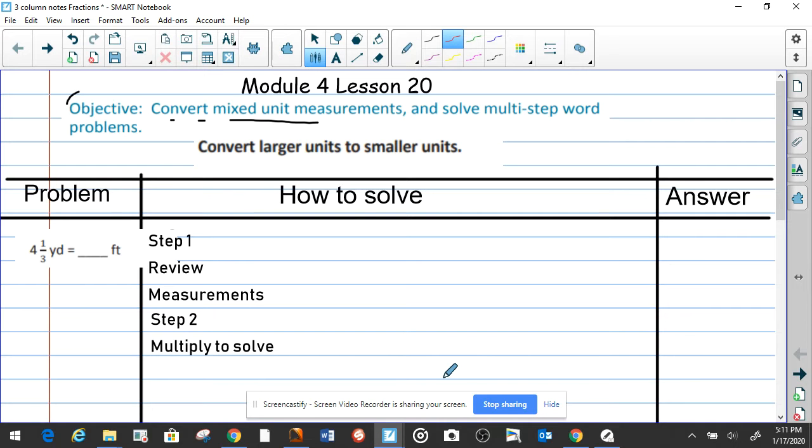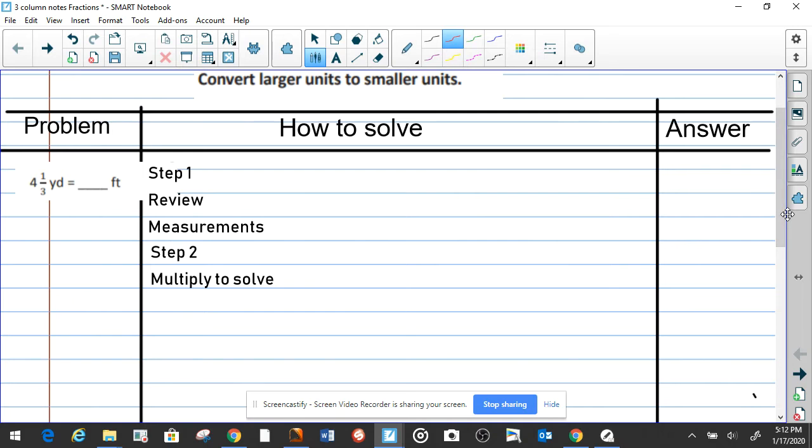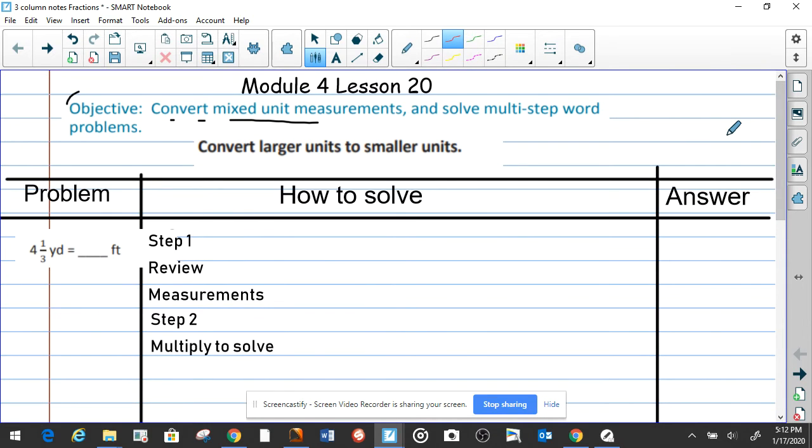Hello my friends, welcome back to Module 4 Lesson 20. Yes, we are on lesson 20 now. Let's look at the same thing, conversion of measurements, but this time we're going to convert large units to smaller units. What does that mean? Well, it means that a yard is larger than feet.